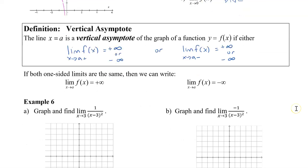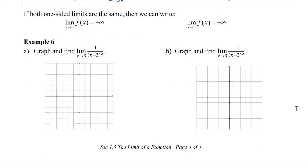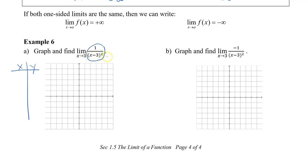Let's take a look at the last example, which asks us to graph and find the limit of this function. To graph, I'm going to draw a table of values with x and y. I can see from this function that if the denominator is 0, that would be caused because x is 3 — since 3 minus 3 equals 0. So we know it's going to be undefined, and that's actually my starting point. I'm going to choose x equals 3, which gives me an undefined y value.